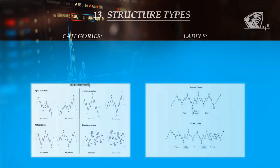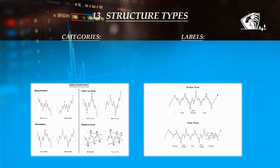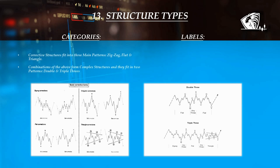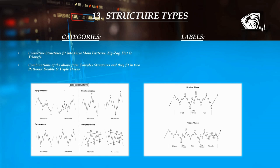Corrective structures fit into three main patterns. Combinations of the above form complex structures and they fit into two patterns. Corrective structures are labeled with letters: zigzag and flats are labeled with A, B, and C; triangles are labeled with A, B, C, D, E; double threes are labeled with W, X, Y; and triple threes are labeled with W, X, Y, X, Z.